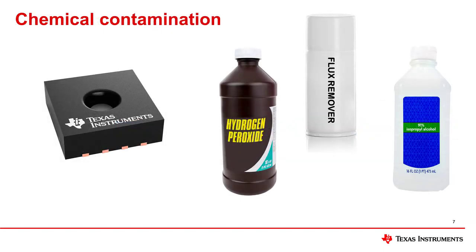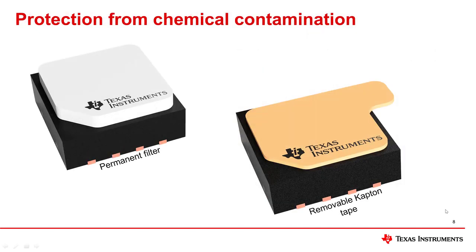Many humidity sensors are in open cavity packages where the sensing polymer is exposed directly to the ambient air. As a result, humidity sensors should not be exposed to volatile chemicals, such as solvents or other inorganic compounds. Exposure to certain chemicals can cause the humidity output readings to drift, which may be irreversible. The opening in the package allows the sensor to sense the relative humidity in the air, but also exposes the polymer to the environment, making it sensitive to pollutants.